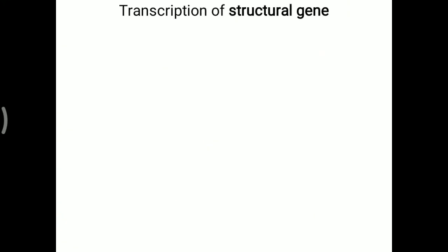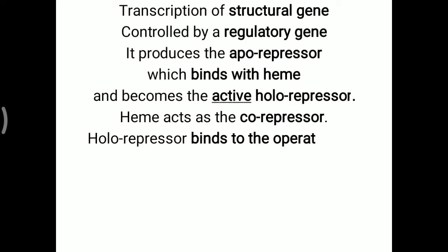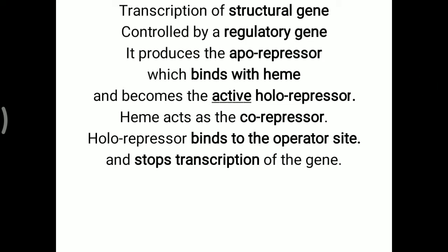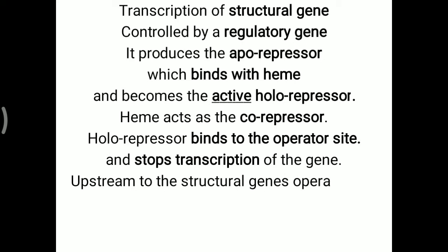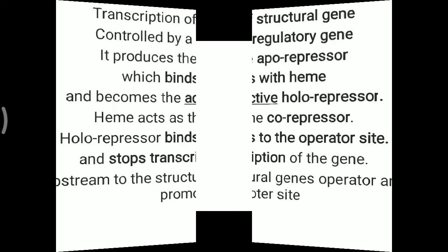In detail: transcription of the structural gene is controlled by the regulatory gene, which produces an aporepressor molecule that binds with heme to become an active holorepressor — so heme acts as the corepressor molecule. The holorepressor binds to the operator site and stops transcription of the structural gene. Upstream of the structural gene, the operator and promoter sites are present.